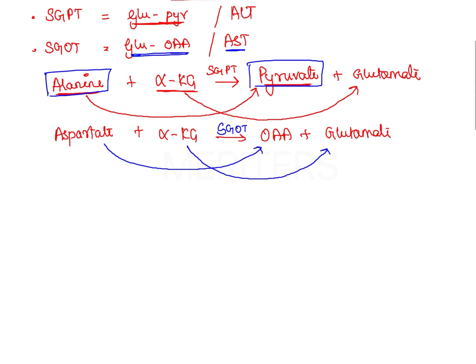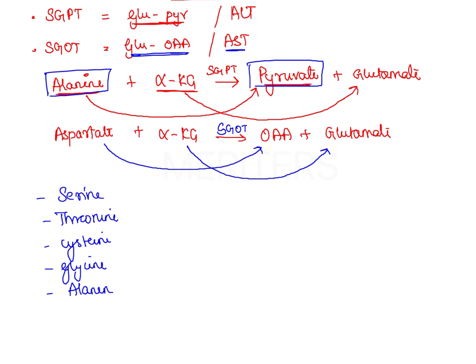Apart from alanine, certain other glucogenic amino acids also get converted into pyruvate: serine, threonine, cysteine, glycine, and alanine. These are some of the amino acids which result in the formation of pyruvate.